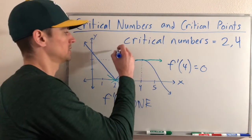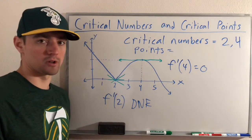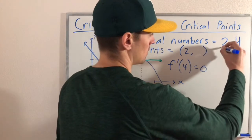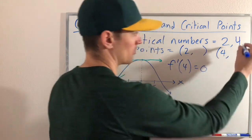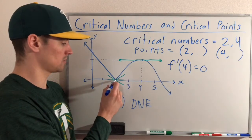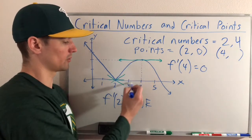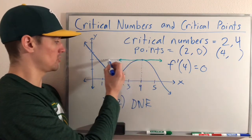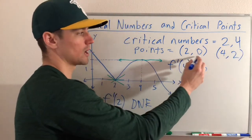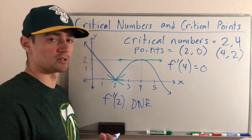Now if we want to find the critical points, we just need a y value to correspond with each critical number. A critical point is going to be an x-y pair that lines up with each critical number. When x is 2, the y value of our function is 0, giving us the critical point (2, 0). When x is 4, the y value is 2, giving us the critical point (4, 2). That's all there is to finding the critical numbers and critical points on a graph.